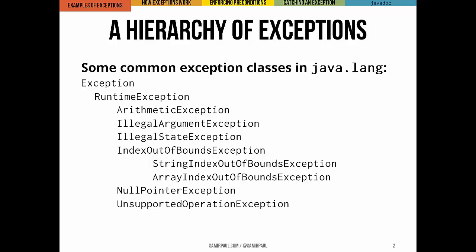An illegal state exception, illegal argument exception — you can use those to enforce preconditions, to make sure that the input to a method follows whatever rules you're setting. There are other exceptions defined in other packages, like Java.util. In general, you're going to determine by yourself which preconditions you want to enforce, and then you're going to choose what kind of exception you want to throw.